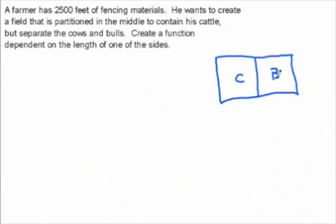So here we're going to have a rectangular field. I'll just draw a sketch of it right here. It's going to be ugly. In this rectangular field, we want to divide down the middle so one side has the cows and the other side has the bulls.